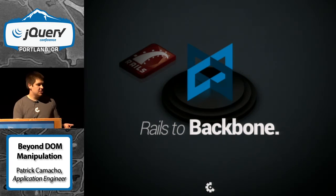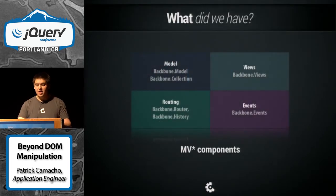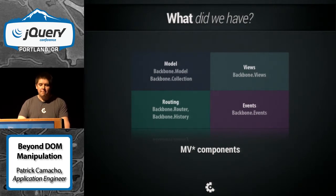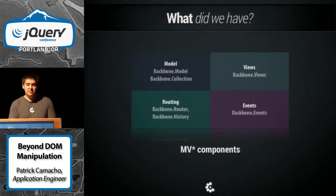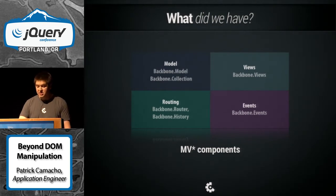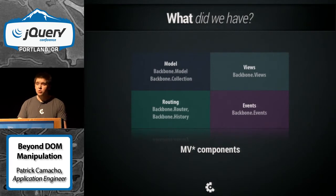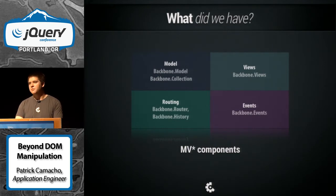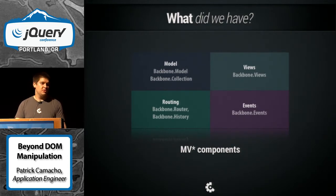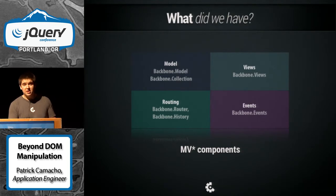We chose Backbone to do this. Backbone gave us a few starting pieces. It gives us a model layer which gives us an ability to manage data and communicate with the server. It gives us a view which allows us to put HTML onto the DOM and listen to events. It gave us a routing mechanism which allowed us to tie into URL changes for URL-based states — we could do push state or anything like that. And we also had a very simple eventing system, which gave us the ability to do pub-sub: to listen to events, to subscribe, and also to publish them.